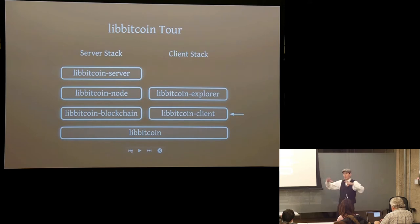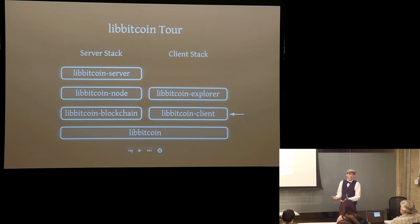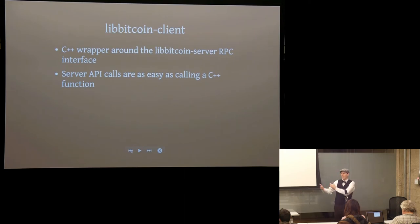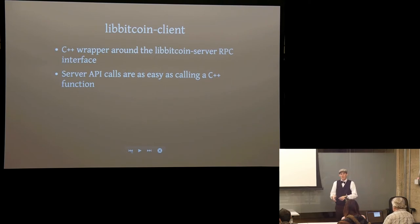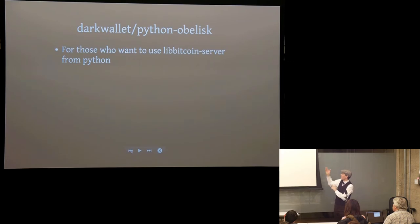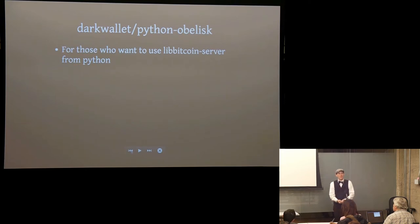If you don't want a big server with 60 gigs dedicated to the blockchain, LibBitcoinClient is a C++ wrapper around the 0MQ stuff — call a C++ function, it talks to the server, gets the result, and returns it synchronously or via async callback. If you don't want C++, there's a Python project called DarkWallet slash Python Obelisk — same idea but Pythonized. There's also DarkWallet gateway, a bridge with LibBitcoin server on one side and WebSockets on the other for JavaScript clients.